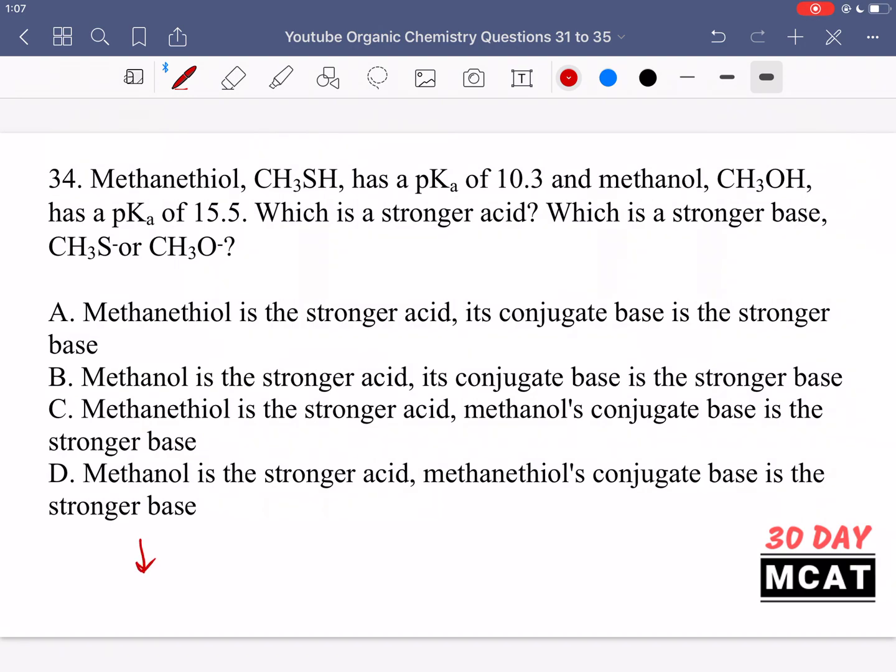A low pKa means a strong acid. Between these two, methanethiol has a lower pKa of 10.3, so it is relatively a stronger acid. Methanol has a pKa of 15.5, so it is the stronger base. Whichever one has a lower pKa is a stronger acid and whichever one has a higher pKa is a stronger base.